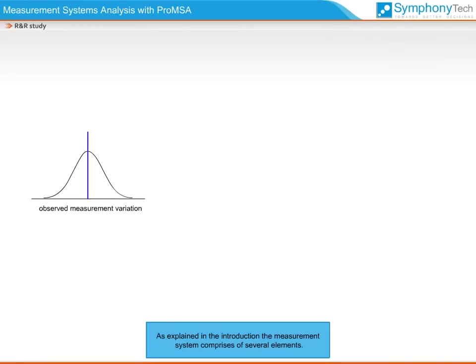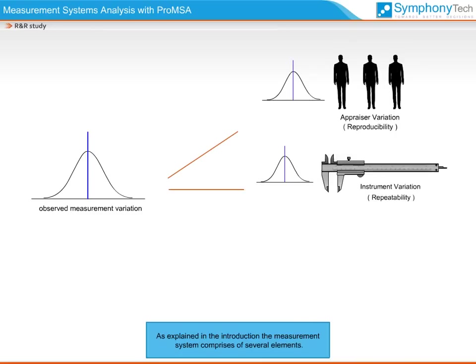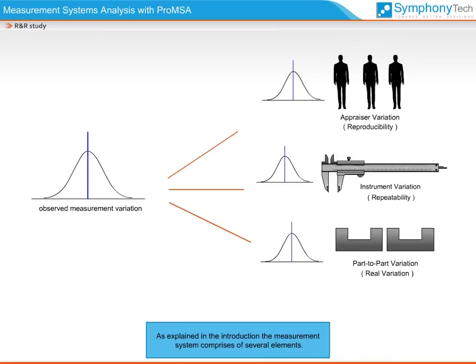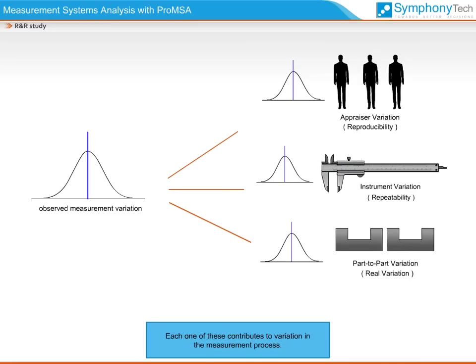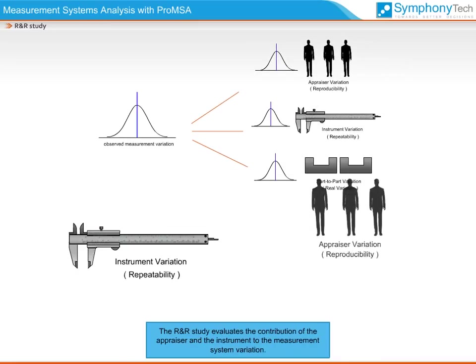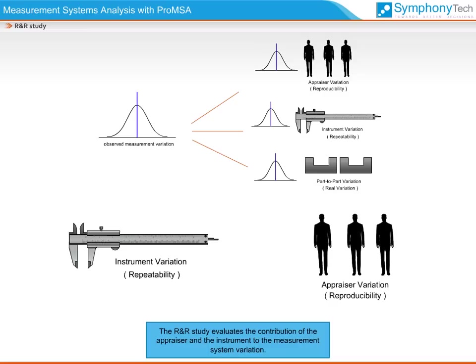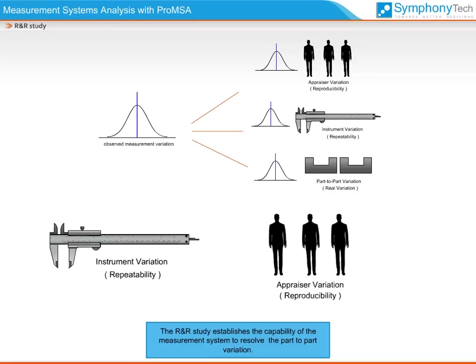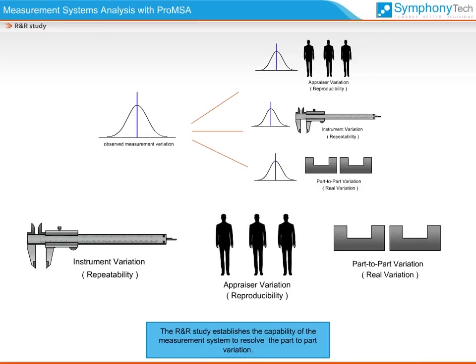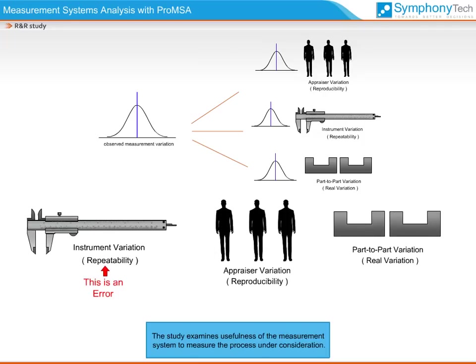As explained in the introduction, the measurement system comprises several elements. Each one of these contributes to variation in the measurement process. The repeatability and reproducibility study evaluates the contribution of the appraiser and the instrument to the measurement system variation. The R&R study establishes the capability of the measurement system to resolve part-to-part variation and examines the usefulness of the measurement system to measure the process under consideration.